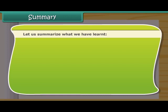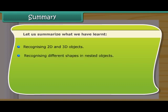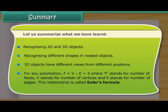Summary. Let us summarize what we have learned. Recognizing 2D and 3D objects. Recognizing different shapes in nested objects. 3D objects have different views from different positions. For any polyhedron, F plus V minus E is equal to 2, where F stands for number of faces, V stands for number of vertices, and E stands for number of edges. This relationship is called Euler's formula.